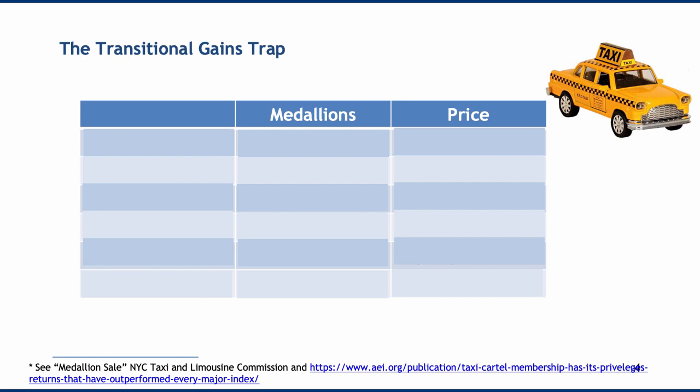The medallions came into being in 1937. Originally, just under 12,000 medallions were issued. They weren't handed out for free — there was a token charge of $10 per medallion, which is approximately $175 in 2018 dollars.